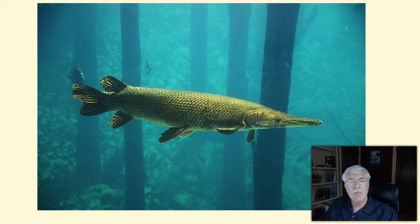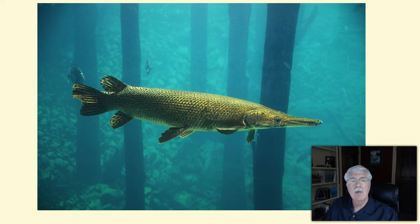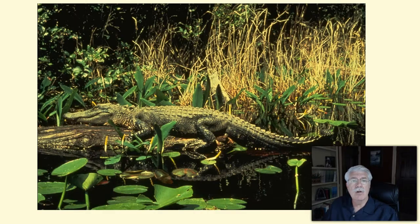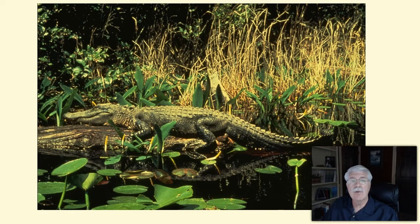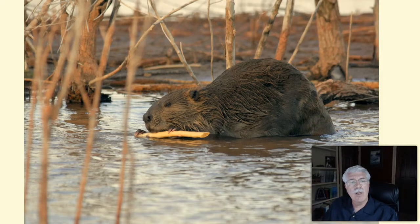Good habitat provides everything a species needs to survive over time. This includes things like appropriate temperature and adequate dissolved oxygen, as well as things like cover, such as logs and aquatic vegetation, or a particular bottom substrate. Channel catfish, for example, are native to Texas and are well adapted to Texas's warm climate and aquatic habitats.